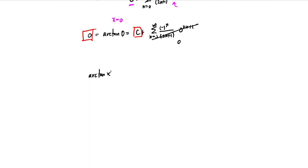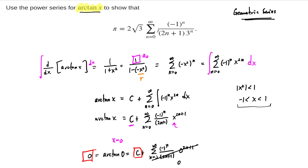So the arctangent of x equals the sum from n equals 0 to infinity of negative 1 to the n over 2n plus 1 times x to the power 2n plus 1. Now we go back and remember what our problem was — we want to show that pi equals this series. Comparing this sum with our power series for arctangent, we see the negative 1 to the n over 2n plus 1 part matches.